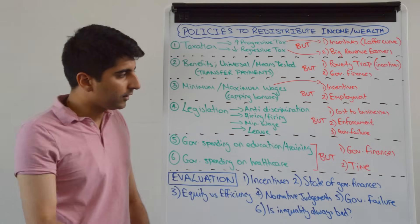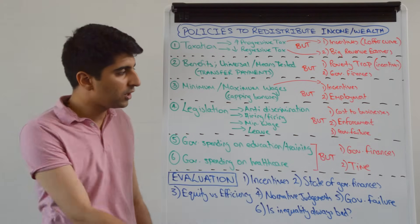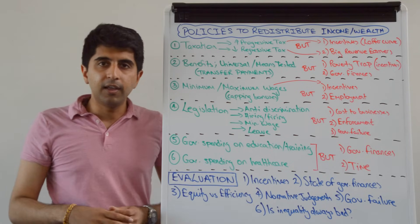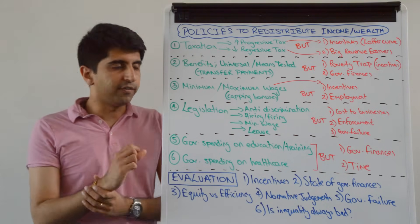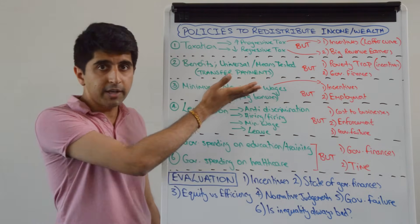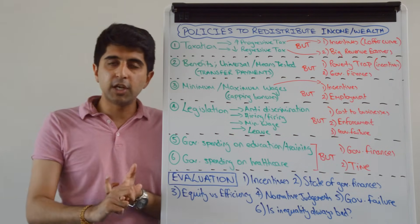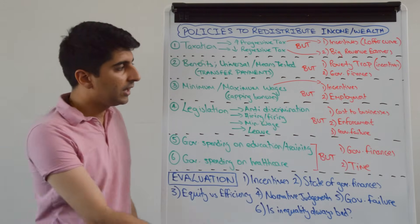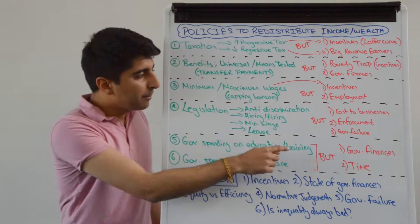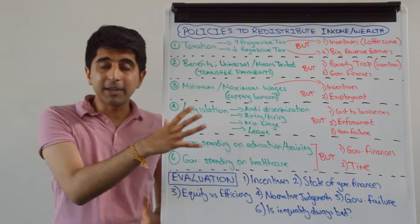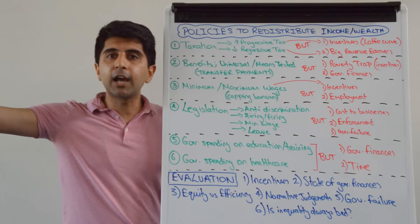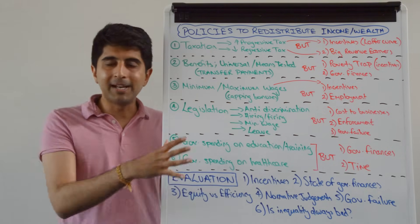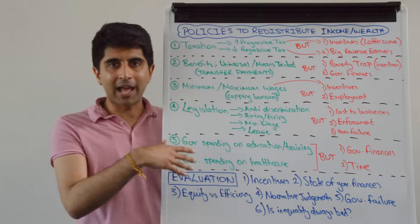Legislation can also be used by governments. Anti-discrimination laws can help reduce wage differentials. Hiring and firing legislation — making it stricter and harder for firms to fire workers or make workers redundant — can help reduce the unequal nature of income and wealth distribution. By imposing minimum wages as we said, and by allowing more maternity and paternity leave, we can again make outcomes fairer in labour markets. But the problem with legislation is how costly it can be for businesses. The enforcement of it needs to be strong if it's actually going to have an impact. There is also a significant risk of government failure — how businesses may shut down because of how costly these legislations might be, or may relocate to other countries where legislations aren't as strict. These are all unintended consequences of government intervention that can lead to government failure, where the costs of intervention outweigh the benefits.